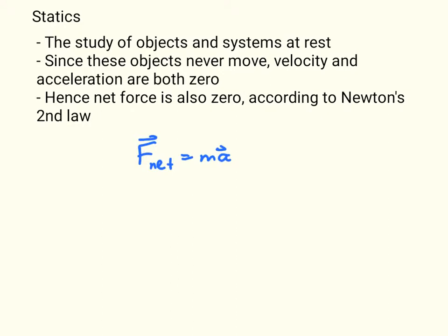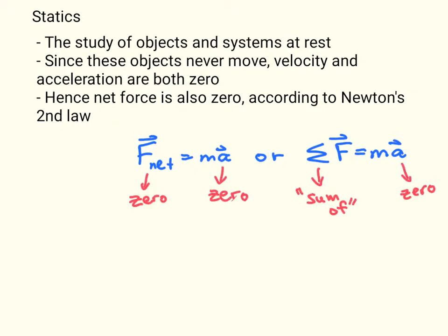Newton's second law tells us that net force is equal to mass times acceleration, or the sum of all the forces is equal to the mass times the acceleration. So if the acceleration of the system is zero, that tells us that the net force — or the sum of all the forces on the object or the system — is also equal to zero. So that's some pretty simple math: if acceleration is zero, it means net force is zero, or the sum of all the forces is equal to zero.